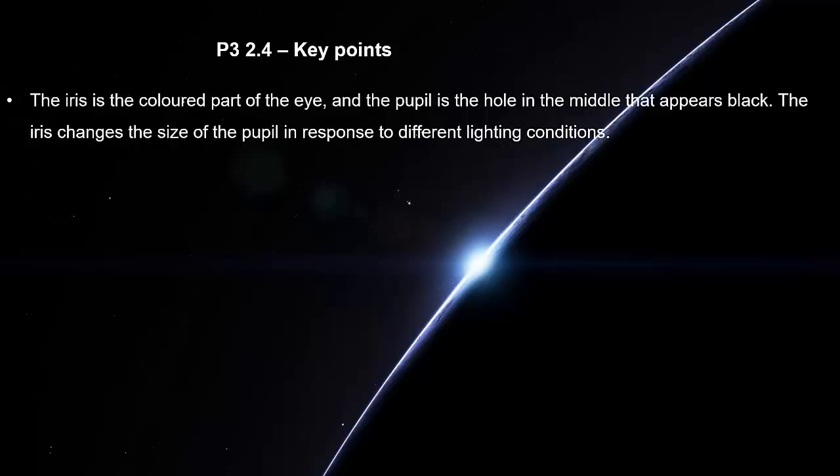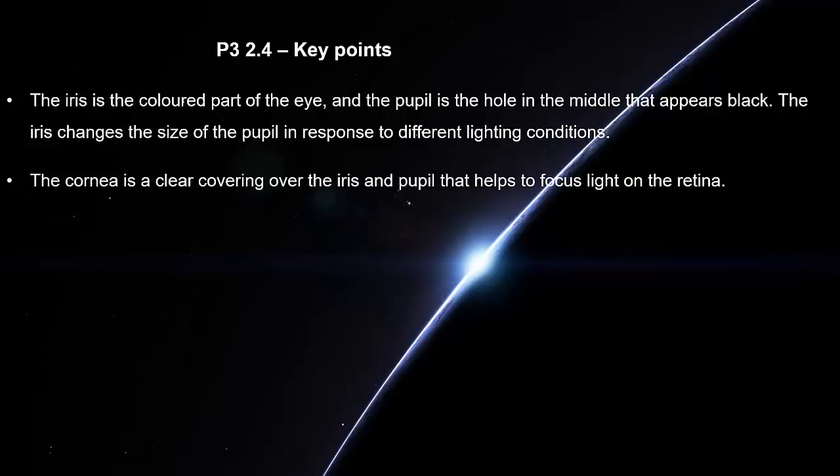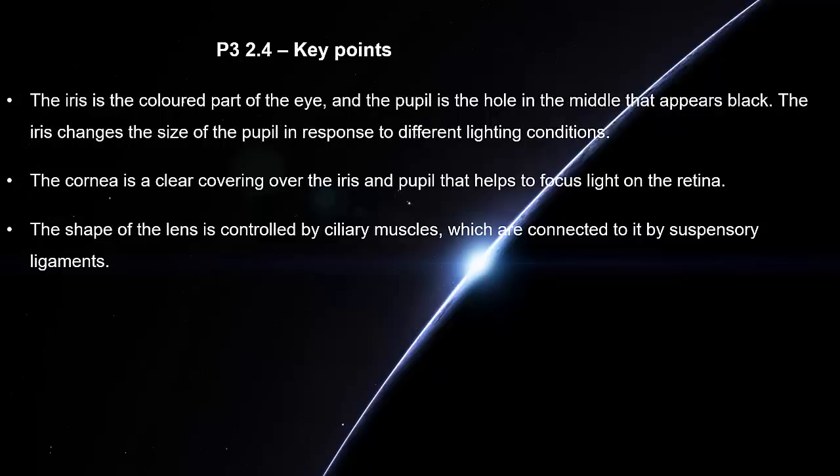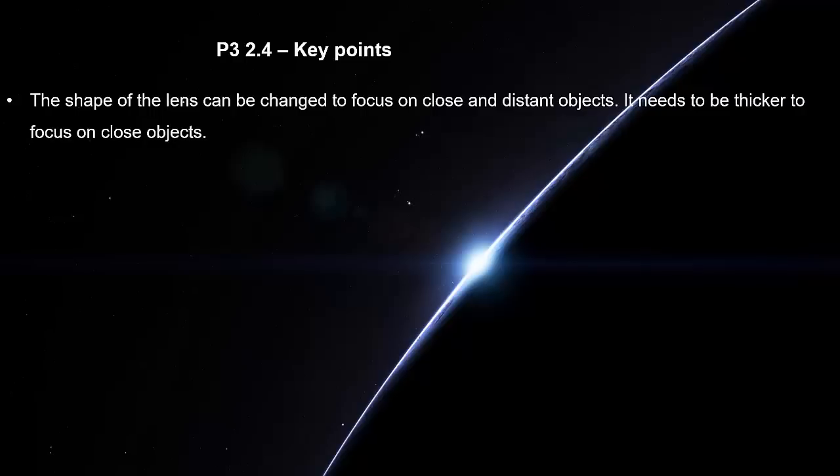The iris is the colored part of the eye and the pupil is the hole in the middle that appears black. The iris changes the size of the pupil in response to different lighting conditions. The cornea is a clear covering over the iris and pupil that helps focus light on the retina. The shape of the lens is controlled by ciliary muscles which are connected to it by suspensory ligaments. The retina detects light and sends electrical signals to the brain. The shape of the lens can be changed to focus on close and distant objects.